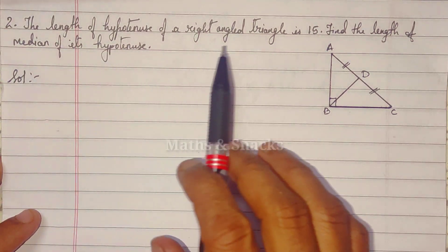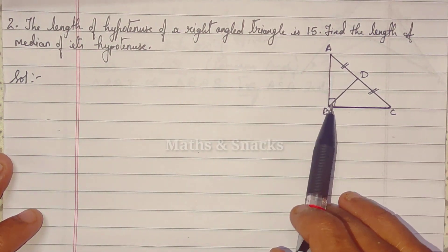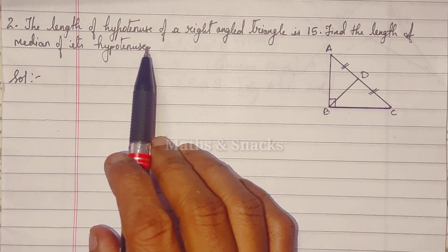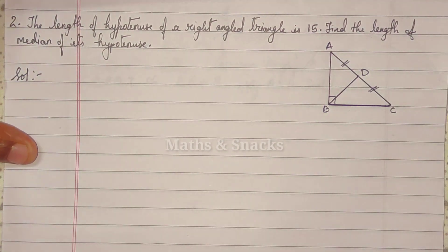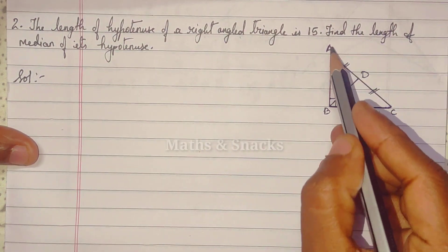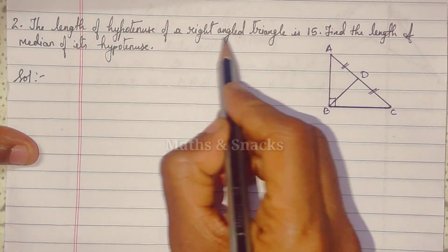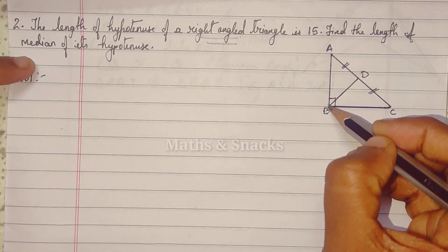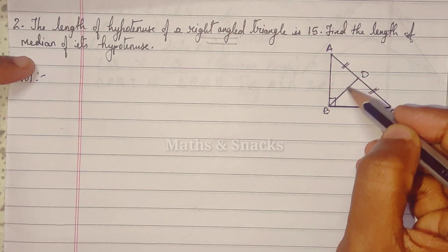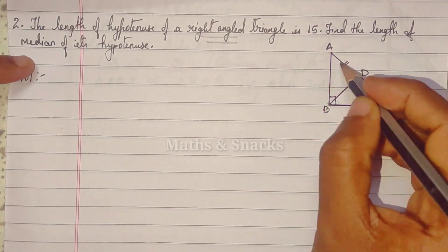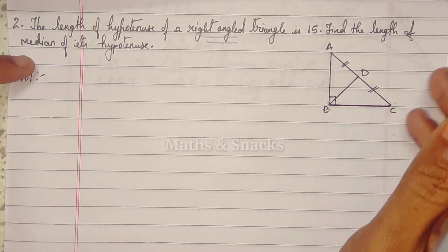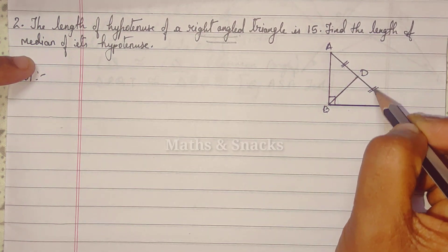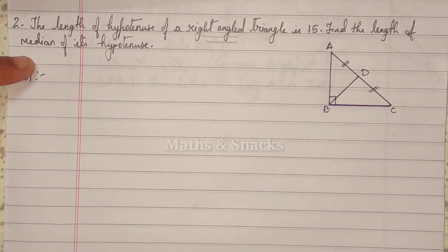Second question. The length of hypotenuse of a right-angled triangle - see, right-angled triangle is 15. Find the length of median of its hypotenuse. See, the diagram is not given, so we have to make it ourselves. A right-angled triangle, so we draw a triangle which is right-angled, 90 degrees. Right-angle means 90 degrees. Now, what are they saying? Median. Median means from the 90-degree angle, there is a perpendicular line going to the opposite side. That will be the median, meaning it divides the hypotenuse equally. Median - it should not be perpendicular, but it divides the hypotenuse equally. That's why we have marked equal signs. We've already marked equal signs here.